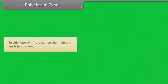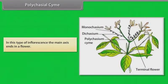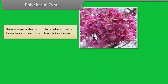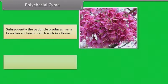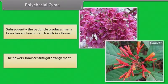In polycasial cyme, the main axis ends in a flower. Subsequently, the peduncle produces many branches and each branch ends in a flower. The flowers show centrifugal arrangement. Example: Hamelia.